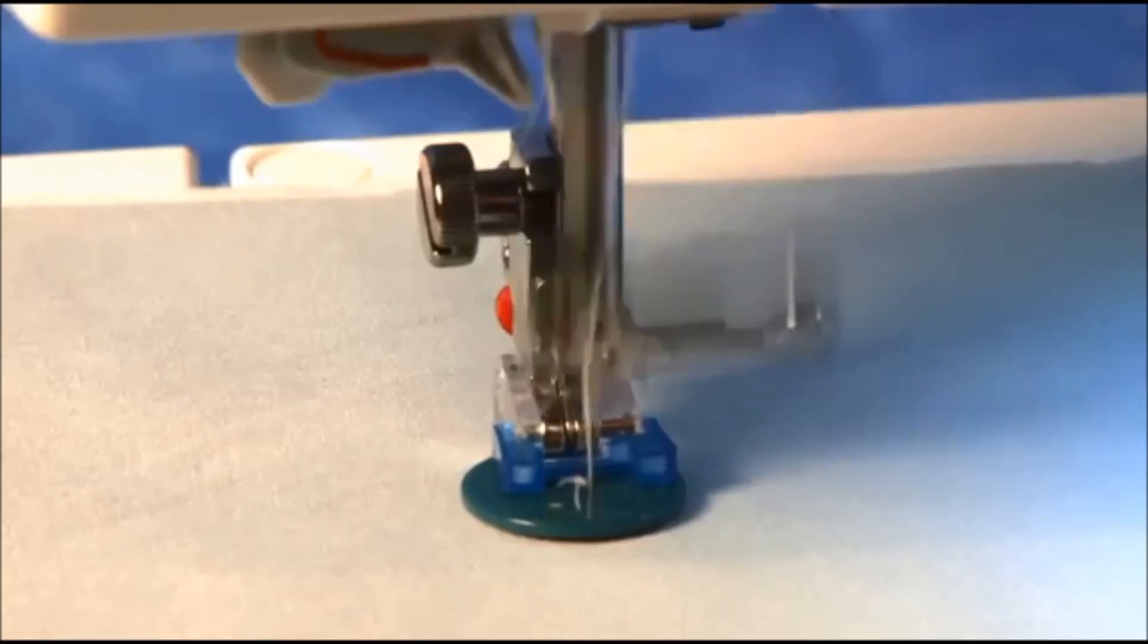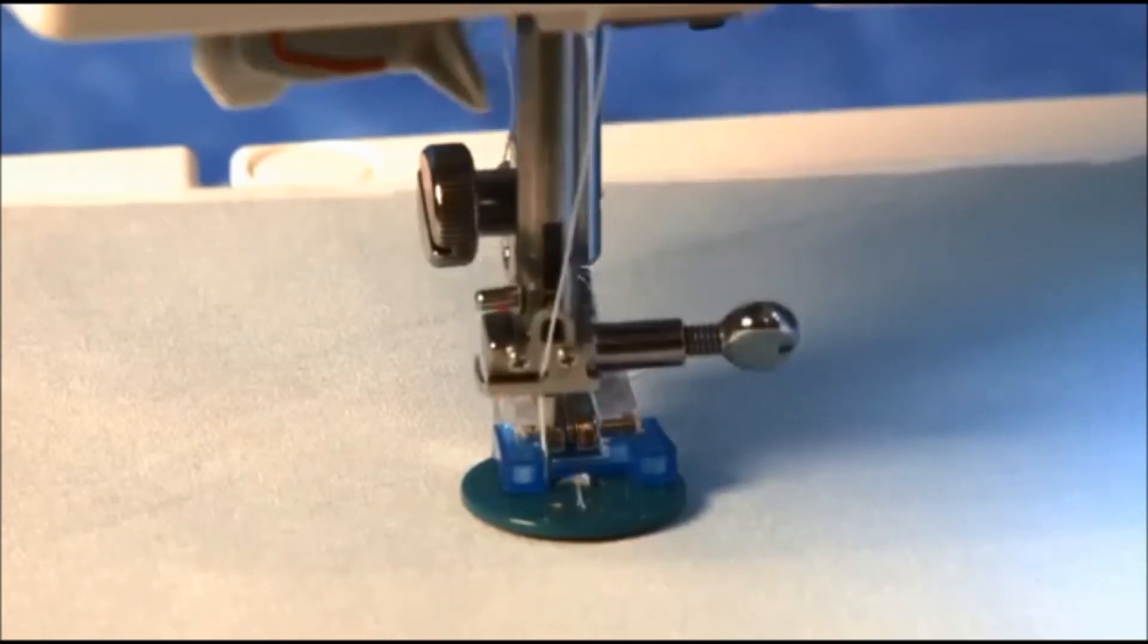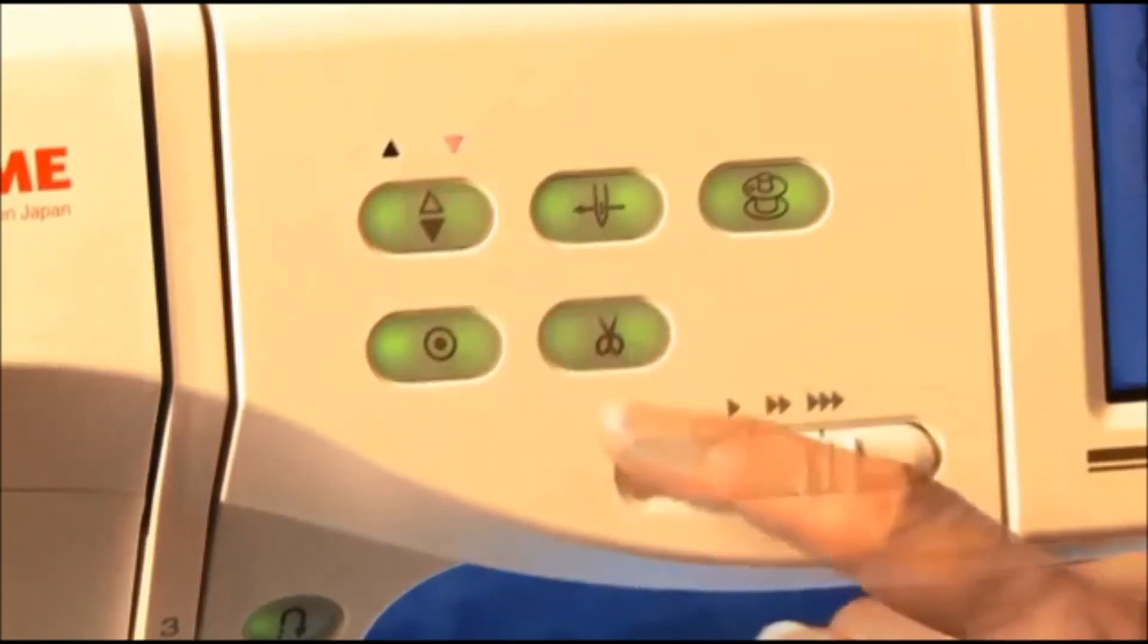When you're ready, stitch the button. The machine will tie it off automatically. Now raise the needle and cut the thread.